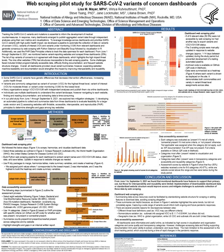To better leverage these resources, we launched a pilot study from June 1st through September 9th of 2021, where we explored two mitigation strategies. The first is developing an automated pipeline to collect and summarize data from three dashboards to evaluate feasibility for a large-scale version. The second is assessing websites with findable, accessible, interoperable, and reproducible — or FAIR — principles to determine strengths and gaps in data accessibility among key websites.